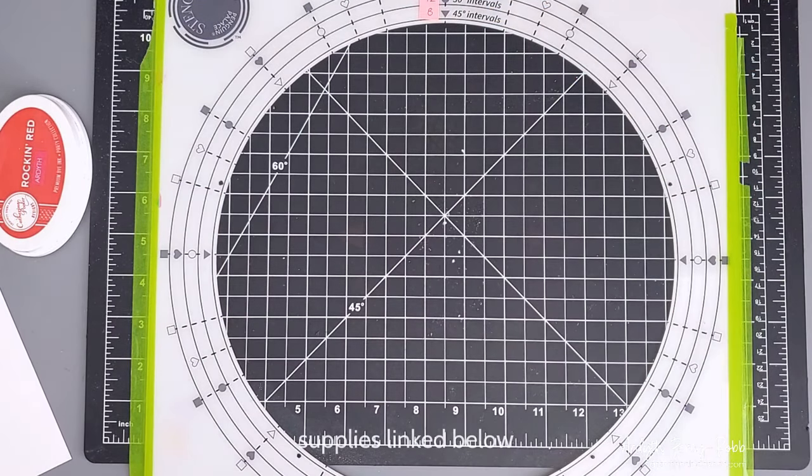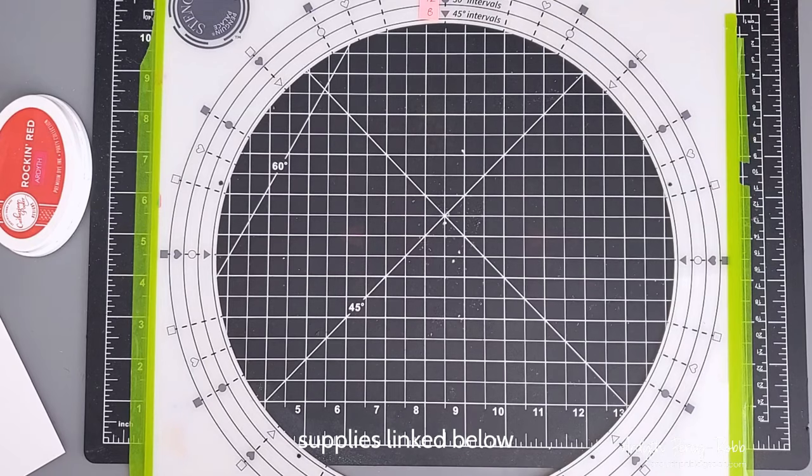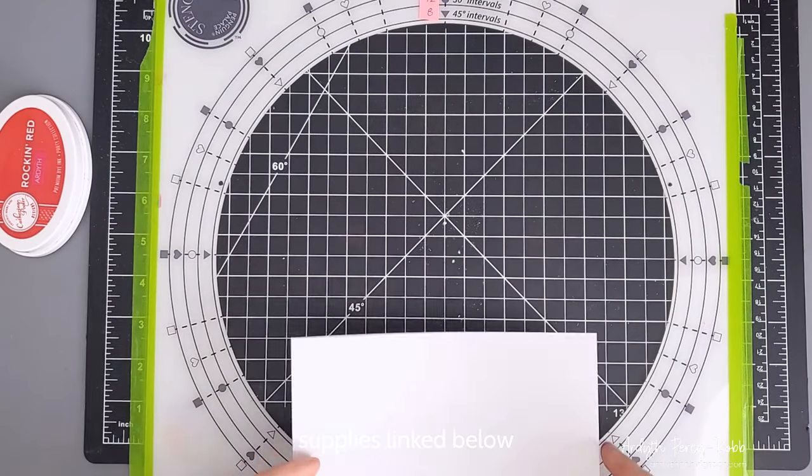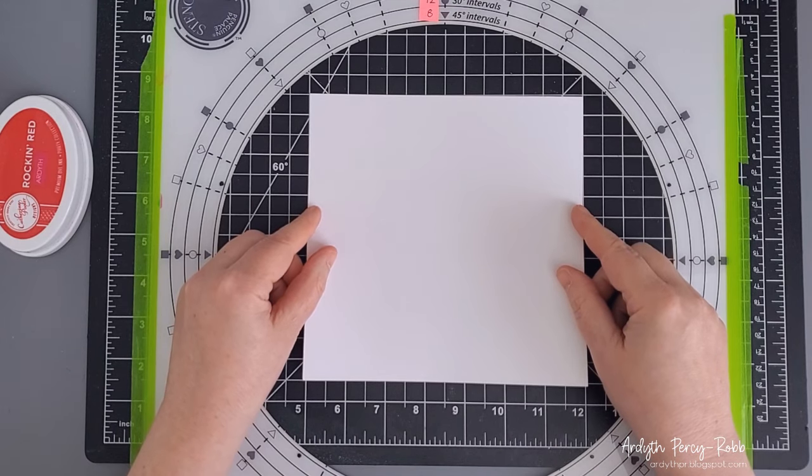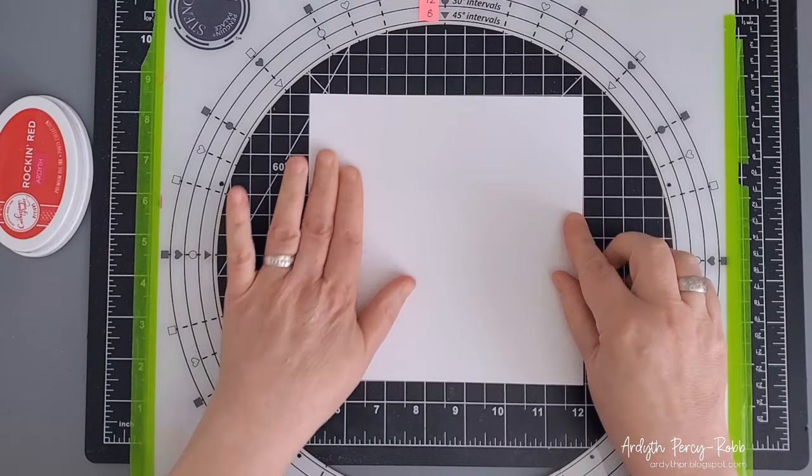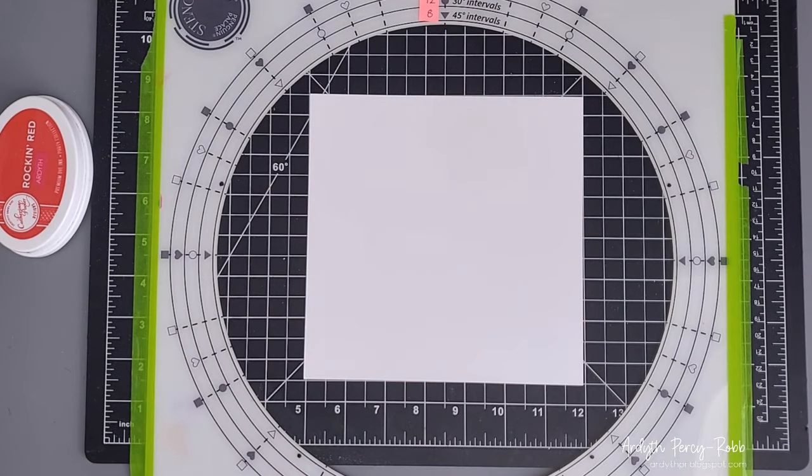First I'm starting with the Stencils 360 tool, which is from a Canadian company called Penguin Palace Stamps. It's been around since last fall and I've had lots of fun with it. I've linked my playlist above so you can see how I've used it from beginner to advanced techniques.